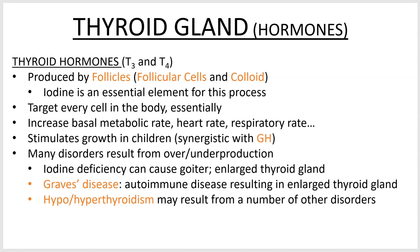Over or under production of thyroid hormones can lead to a number of different disorders. Graves disease is an autoimmune disease which causes an enlarged thyroid, so you can get hyperthyroidism due to this autoimmune disorder. Just be aware that Graves disease is a thyroid-affecting disease — it causes really bulgy eyes and some metabolic problems. Hypo- and hyperthyroidism in general just mean low thyroid function or high thyroid function, and they can result from other things and cause their own disorders as well.